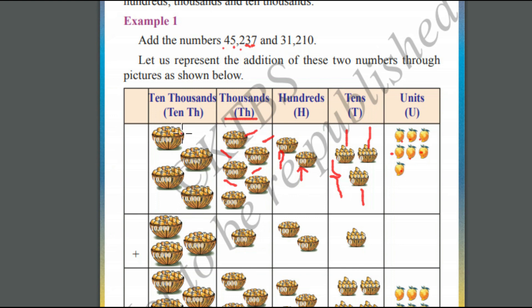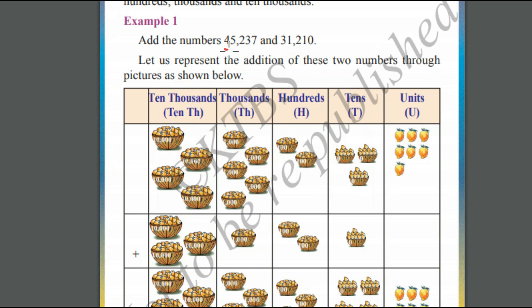Each basket contains 10,000 mangoes — 4 baskets, so totally 40,000 mangoes. We are done with the representation of 45,237.